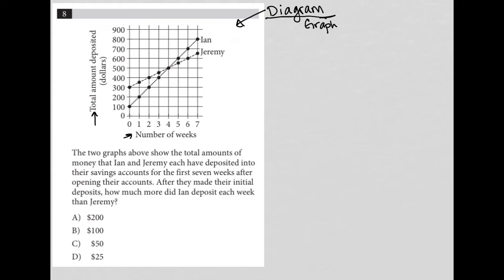And then we have two lines here, one for Ian, one for Jeremy. And then we have all these data points, right? So I'm assuming that each data point represents the total amount deposited on that particular week.